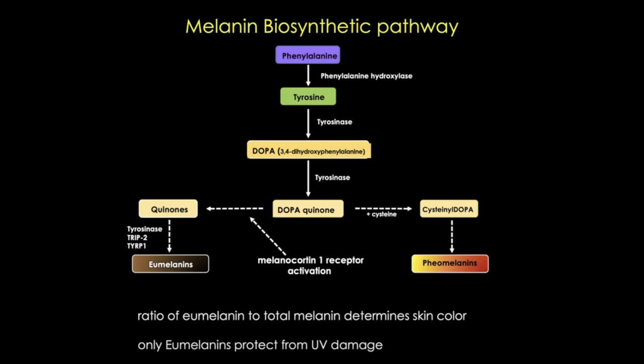Eumelanin is critical for absorbing UV light—it has better photo-protecting properties, higher resistance to degradation, and the ability to neutralize reactive oxygen species. Because pheomelanin doesn't protect the skin from UV radiation, people with more pheomelanin have an increased risk of skin damage from sun exposure. Pheomelanin is more photolabile and may even contribute to skin cancer.